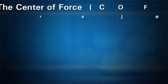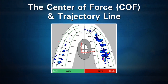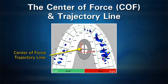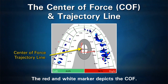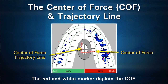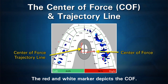For each recording or scan, T-Scan displays a center of force line which represents the force balance of the bite over time. This line is similar to the path of closure. The red and white center force marker represents that point in time during the closure sequence. This is essential for ensuring your patient has a well-balanced bite.